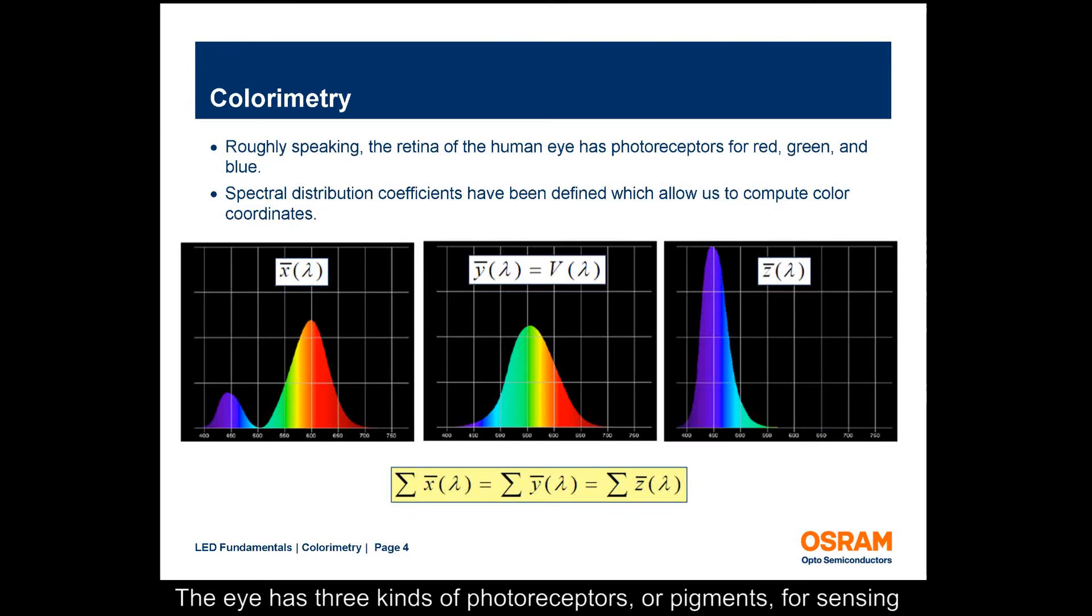The eye has three kinds of photoreceptors, or pigments, for sensing color. In accordance with the sensitivity curves for these three pigments, spectral distribution coefficients have been defined. Color coordinates can then be calculated using these coefficients.